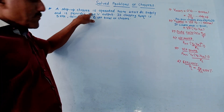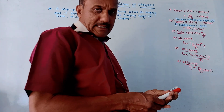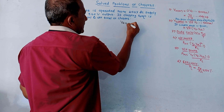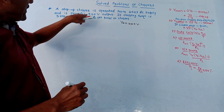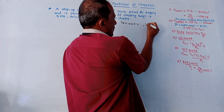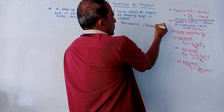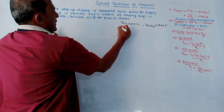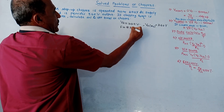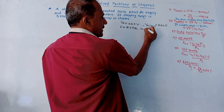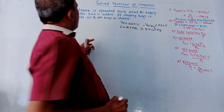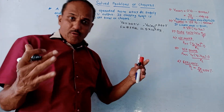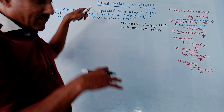Next problem. A step-up chopper is operated from a 200 volt DC supply, so Vs equals 200 volts. It provides 360 volt output, meaning V0 average equals 360 volts. Chopping frequency is 5 kilohertz, so F equals 5 into 10 raise to 3 hertz. Calculate on and off times of the chopper. Keep in mind this is a step-up chopper, where the formulae are slightly different.